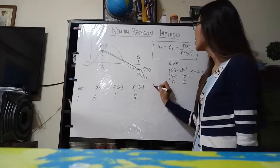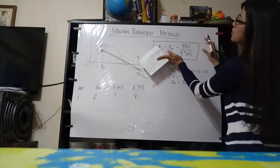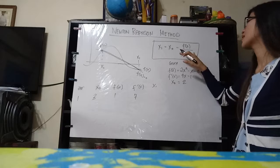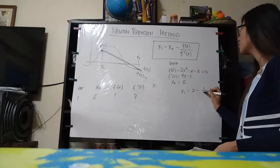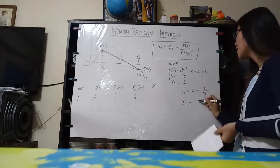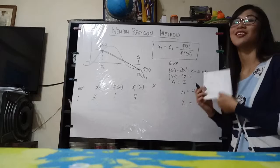And then we are going to substitute these values to our formula here, which is x of 1 equals x of 0 minus f of x over the derivative of the function f prime of x. So it would look like this: 2 minus 1 over 7. Our x of 1 for our first iteration would be 1.8571.